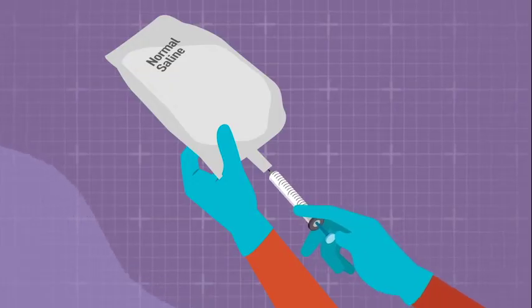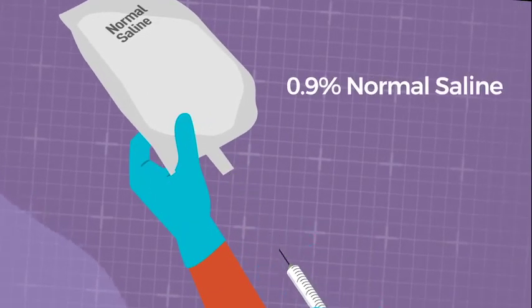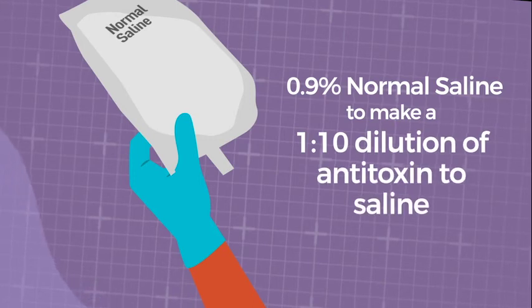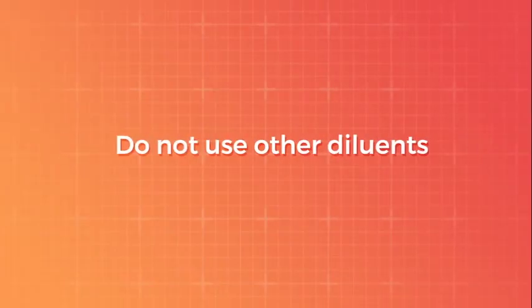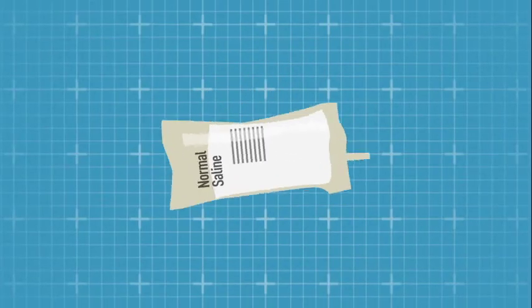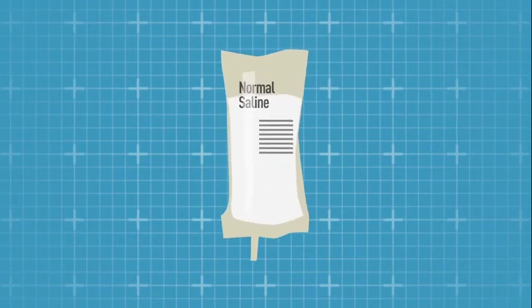Add the contents of the syringe to an infusion bag containing the correct amount of 0.9 percent normal saline to make a 1 to 10 dilution of antitoxin to saline. Do not use any other diluents. Mix the antitoxin solution with the saline by gently inverting the bag and returning it to the original position. The antitoxin is inserted into the bag of normal saline with a syringe. The bag is rotated 360 degrees.